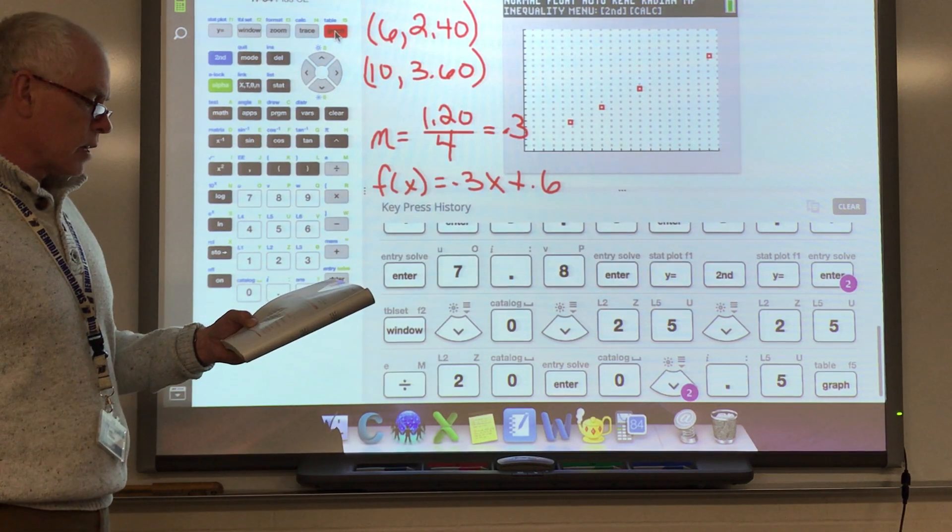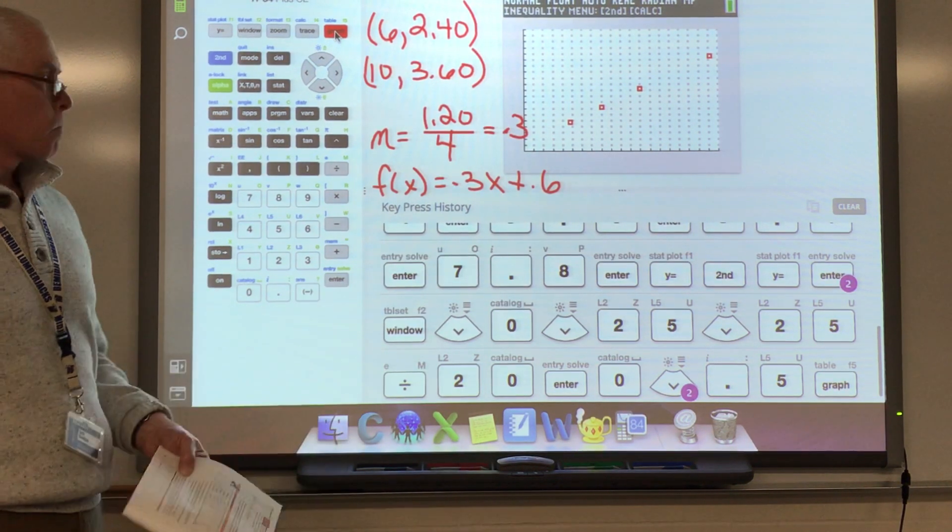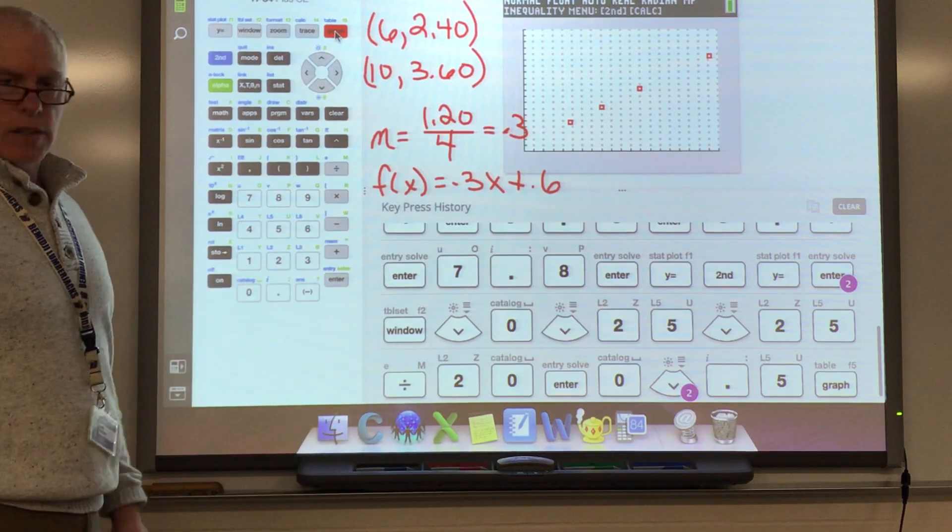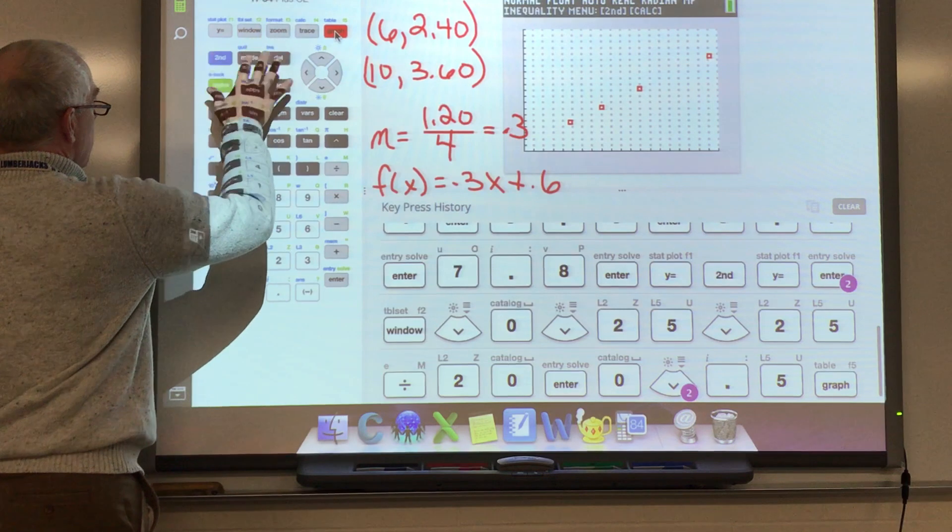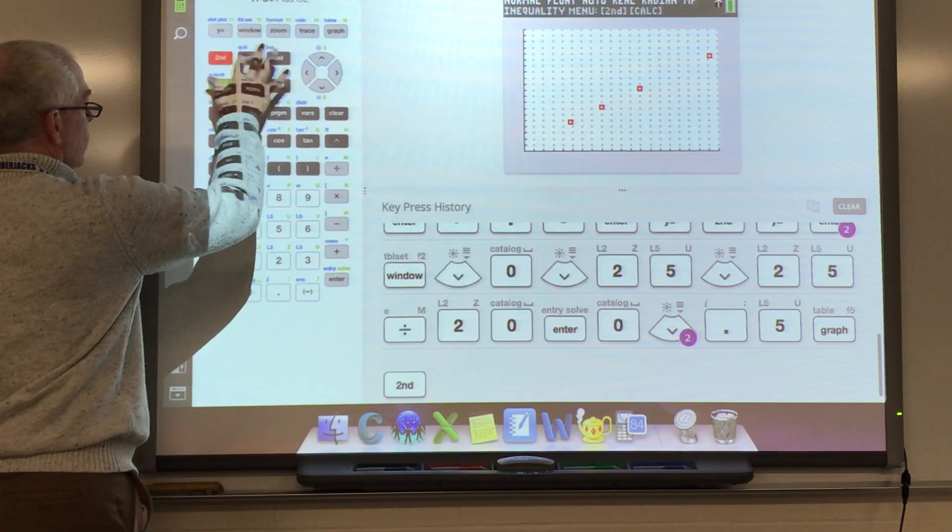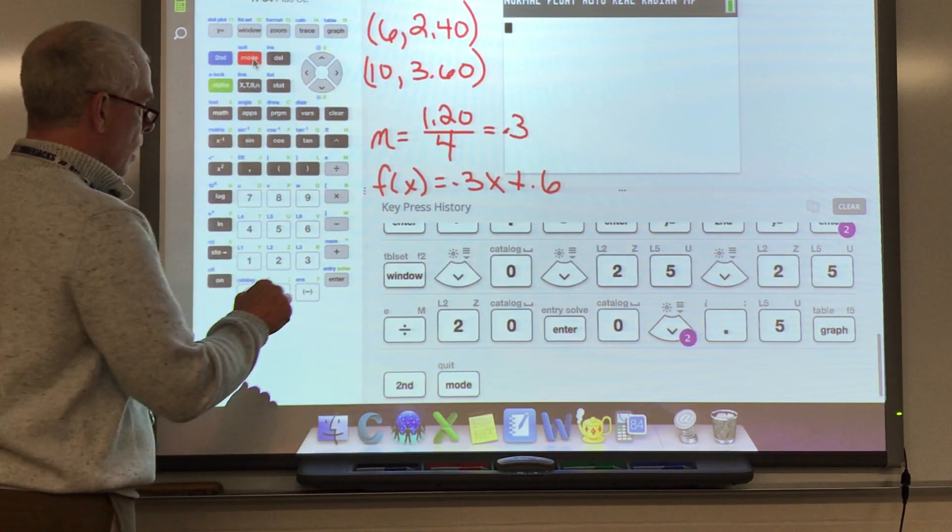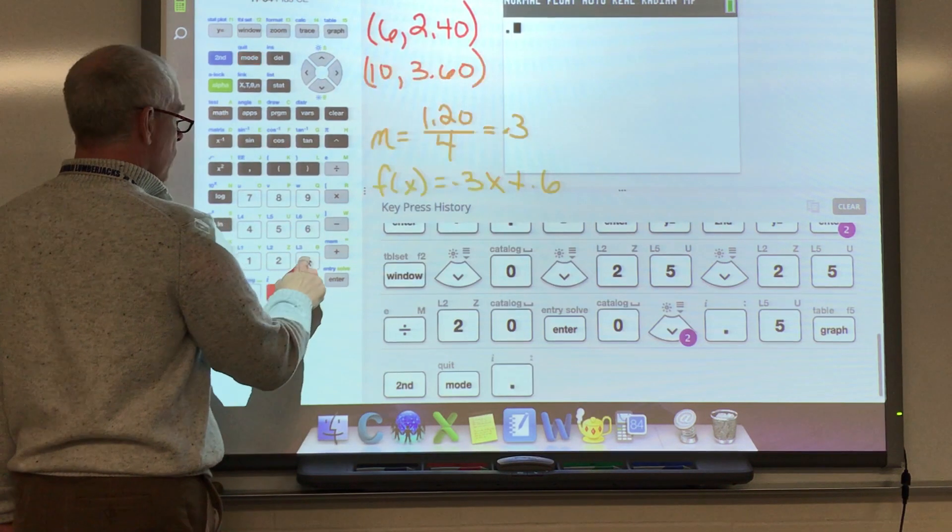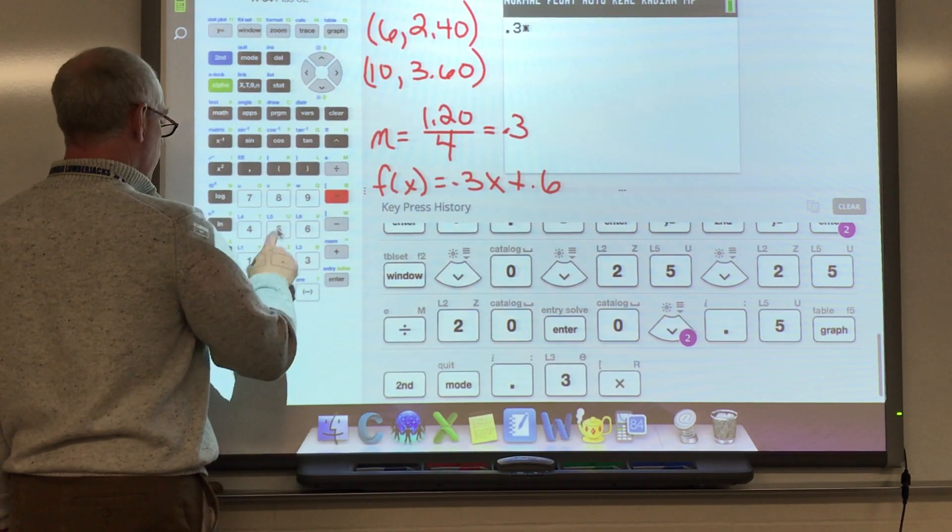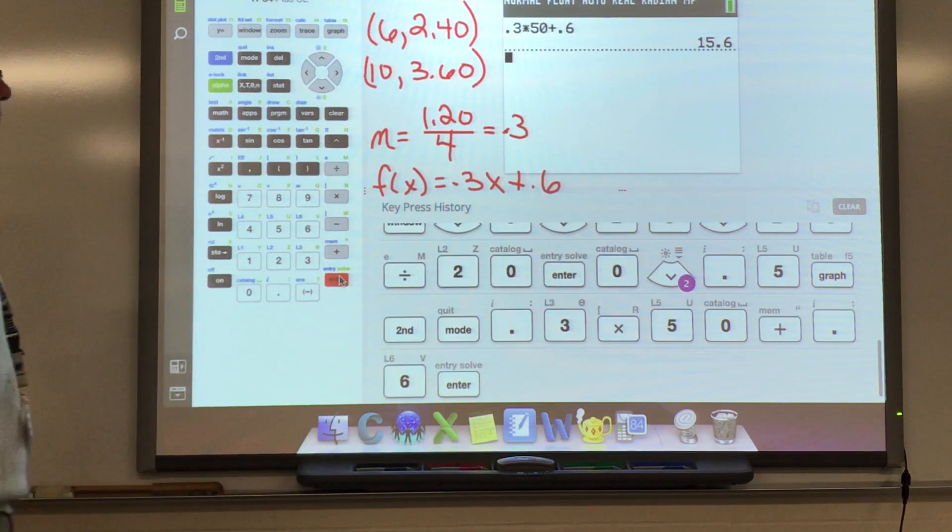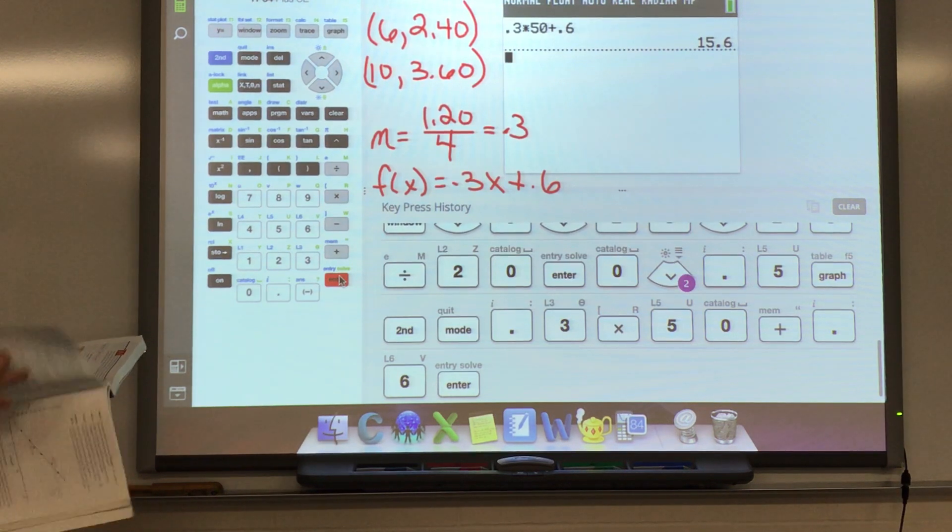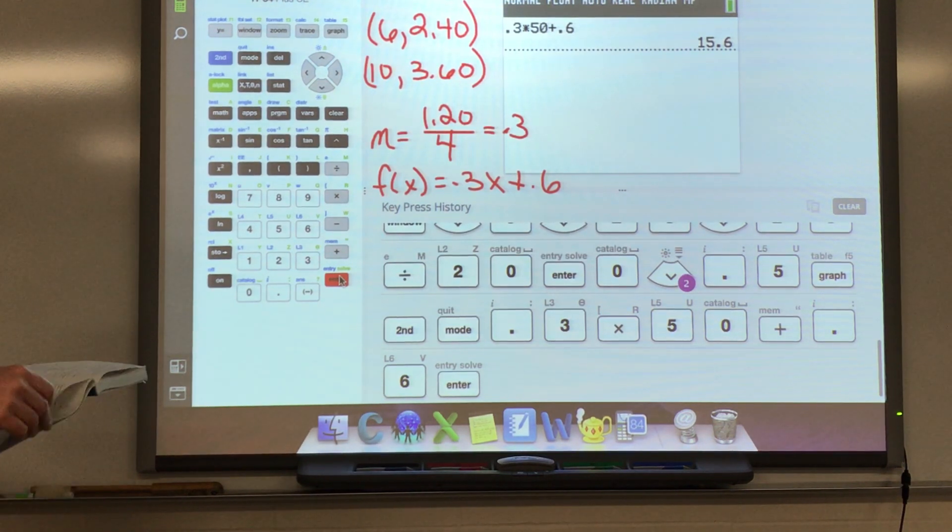D, how much would it cost to buy a serving size of 50 nuggets? Well, I would just need to put a 50 in there. So if I go back to my main screen, I'll hit second quit, and I'm going to go 0.3 times 50 and then add 0.6. It's going to be about $15.60 if you were to order 50 nuggets. And you can follow along. They've kind of worked these problems out as you go.